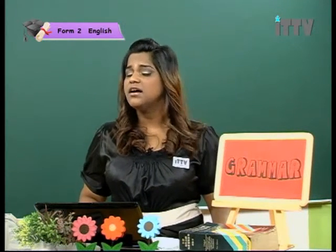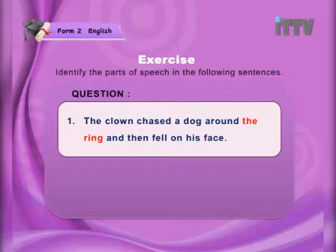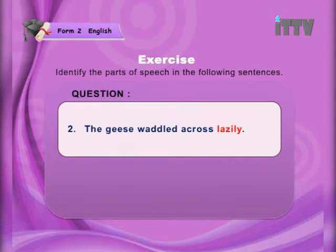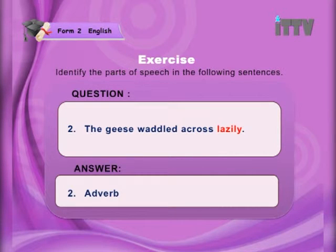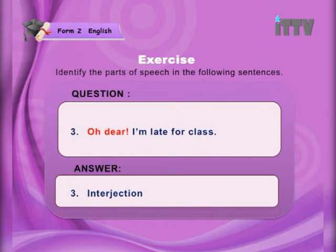Now, was that too hard? I'm sure you got all your answers correct. Let's check the answers. The clown chased a dog around the ring and then fell on his face — the ring is a noun. The geese waddled across lazily — the word lazily is an adverb. Oh dear! I'm late for class — oh dear is an interjection; the word shows an emotion.